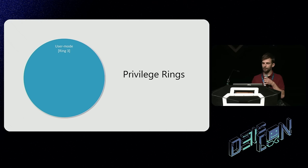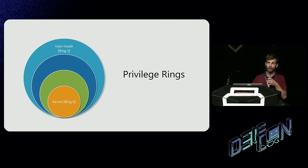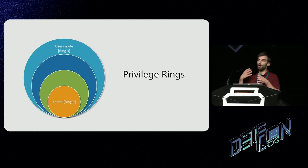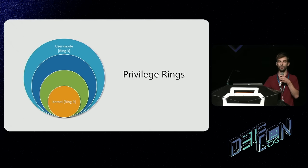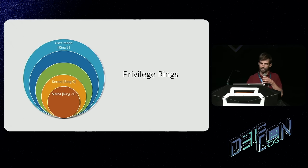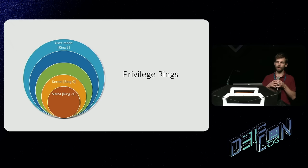At the beginning, there were four privileged rings. The most notable are user mode — user land, user space, ring 3 — it goes by many names, and the kernel. The lower the number of the ring, the more privileges it has, and it works in a manner that is opaque to all the rings above it. For instance, user mode has no notion whatsoever of what's going on in the kernel. Over the years, new additional rings were introduced — for instance, the VMM, ring minus one, where your hypervisor runs, and SMM, ring minus two.